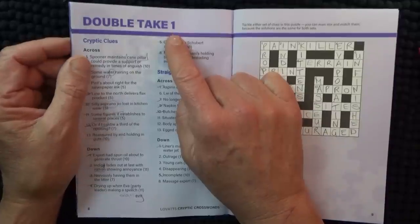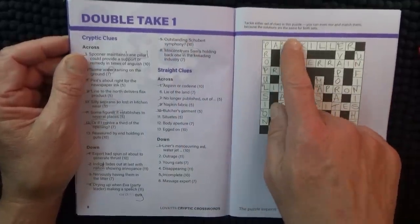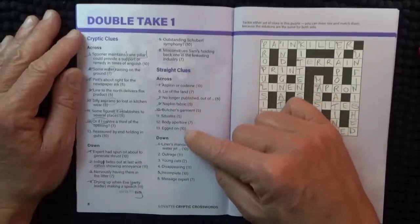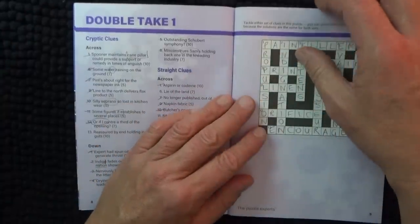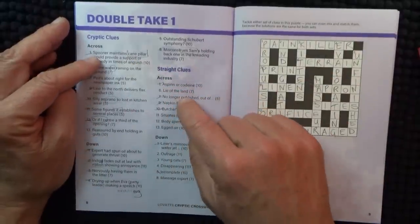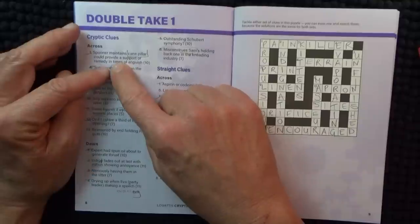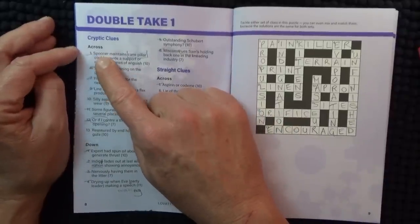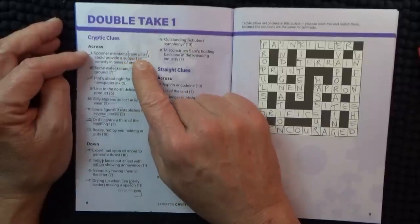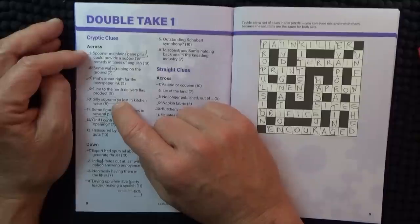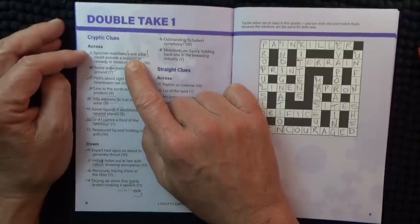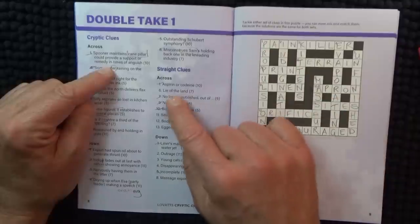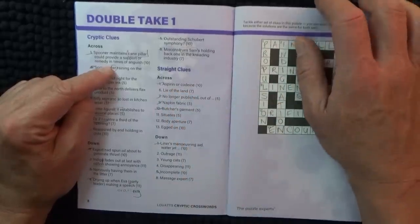So today I'm actually going to do a double take. I've practiced here on double take one. The great thing about double take is that you've got the cryptic clues, and then you've got the ordinary clues, which actually, you see, it's the same answer but has a cryptic clue. So you can see one across Spooner, where the first letters of each word get reversed. So rather than cane pillar, it becomes painkiller. And to provide support or remedy in time of anguish.